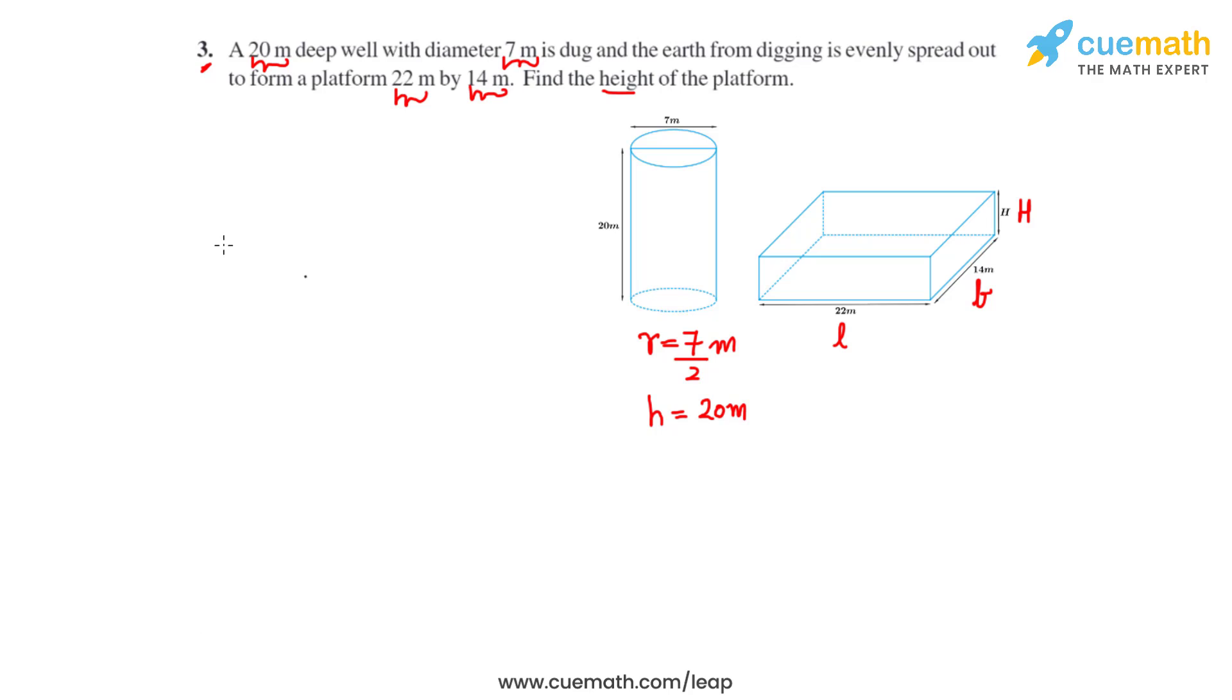So with this information, we can write that the volume of the cylinder, which can be written by the formula πr²h, will be equal to the volume of the cuboidal platform, which will be L times B times capital H.